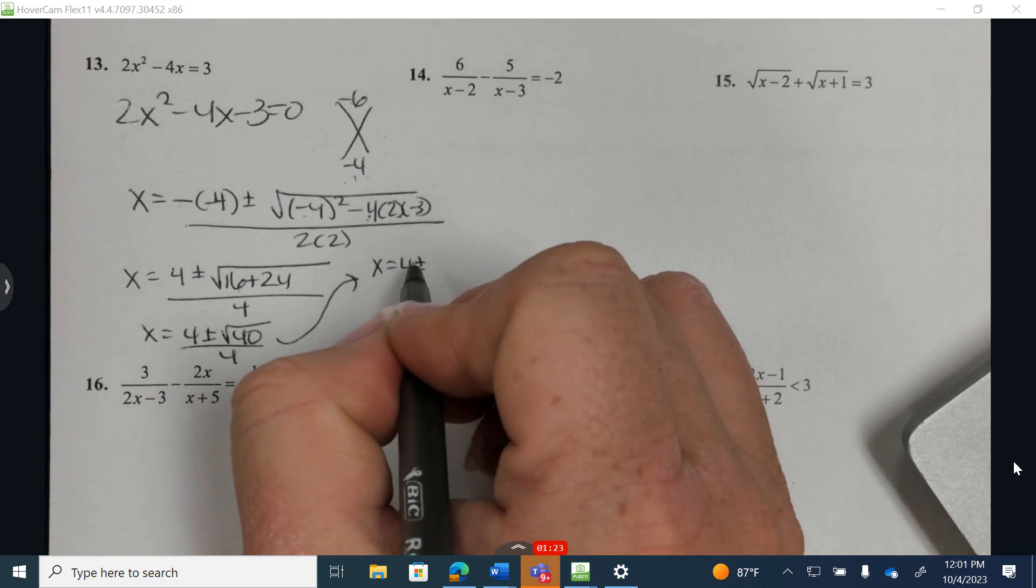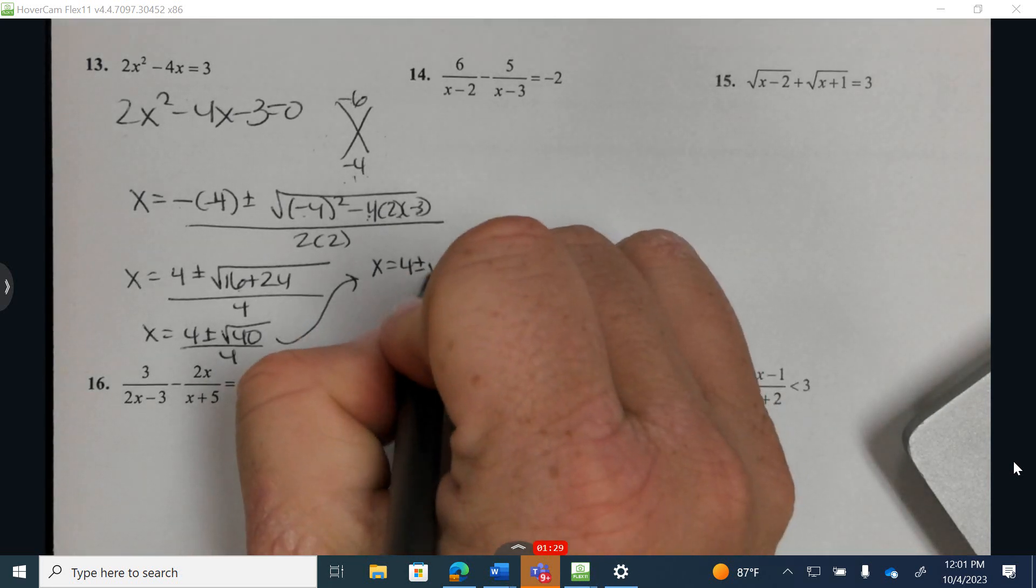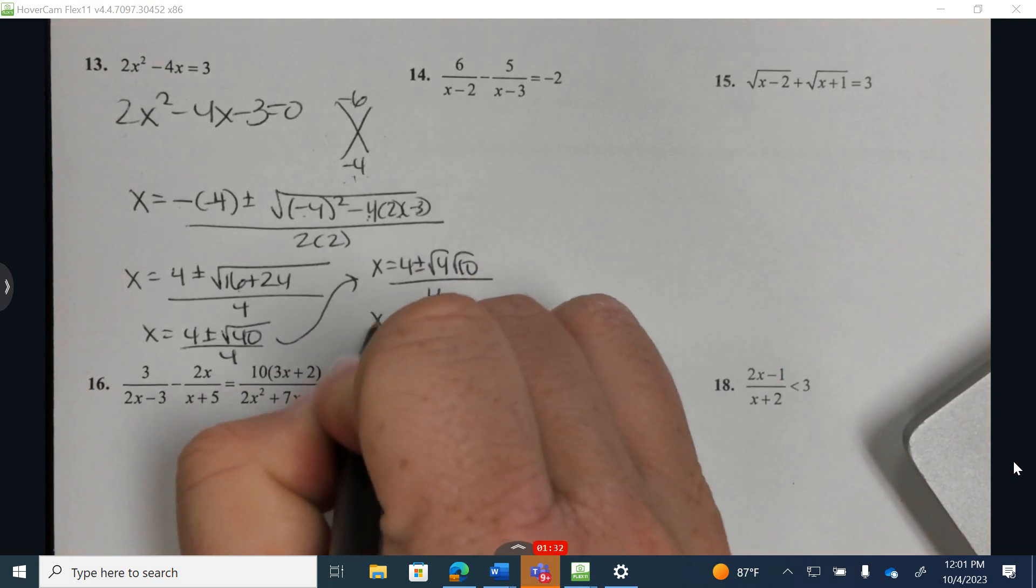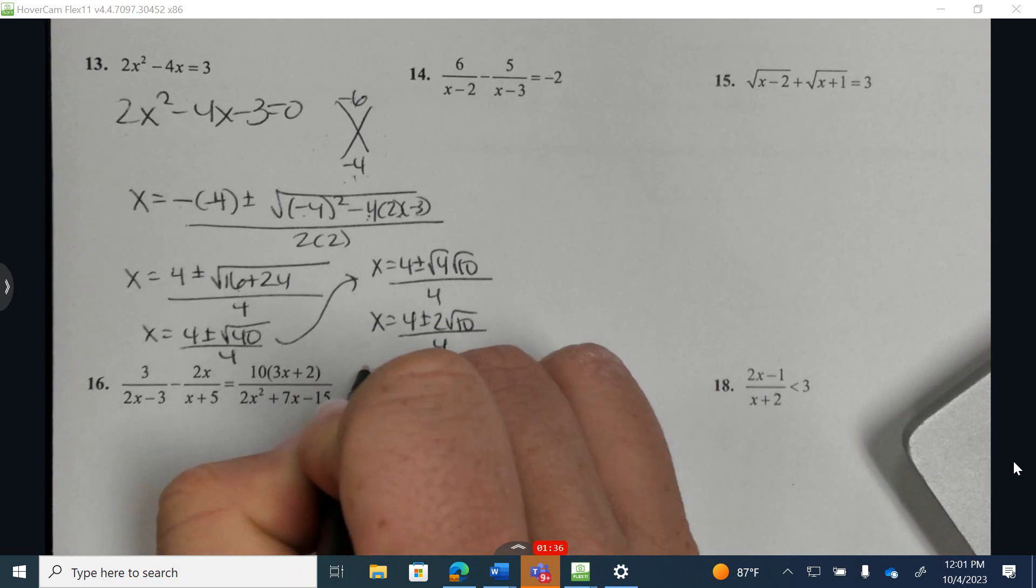So as a reminder, when we're looking at that paper that has my perfect squares, my perfect cubes on, I can break down 40 into 4 and 10. The square root of 4 is 2, over 4.